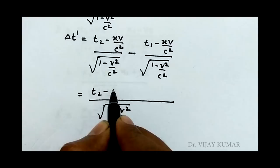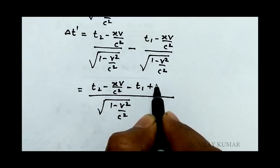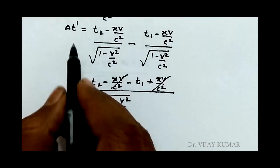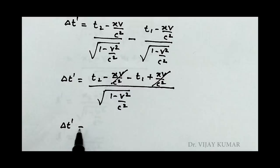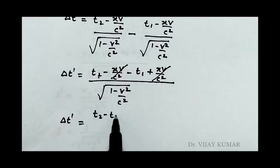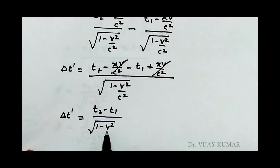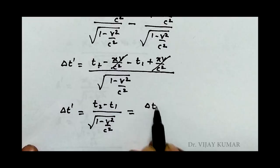And numerator becomes t2 minus xv upon c square minus t1 plus xv upon c square. xv upon c square cancel out. Delta t dash equal to t2 minus t1 upon under root 1 minus v square upon c square.